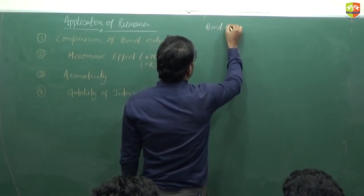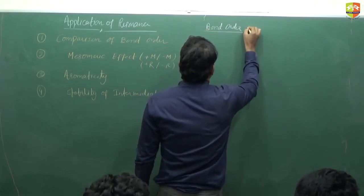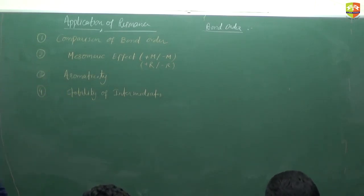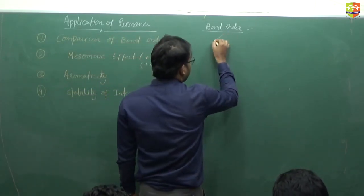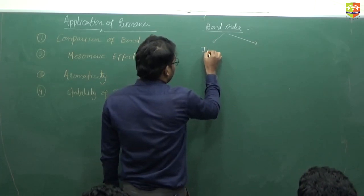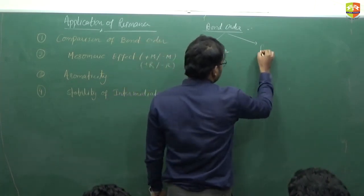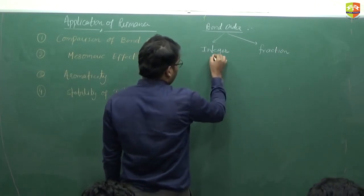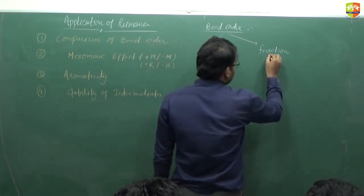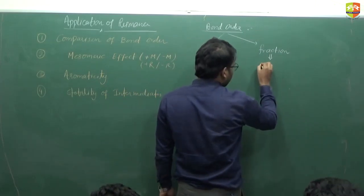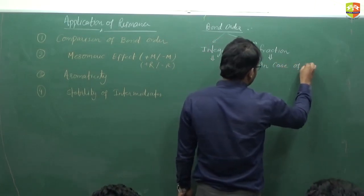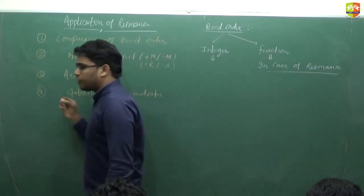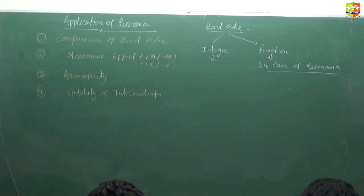Bond order is the number of bonds present between the two atoms in a molecule. A fractional value of bond order is possible in the case of resonance. When resonance is possible, then a fractional value of bond order is possible. An integral value will occur when there is no resonance.